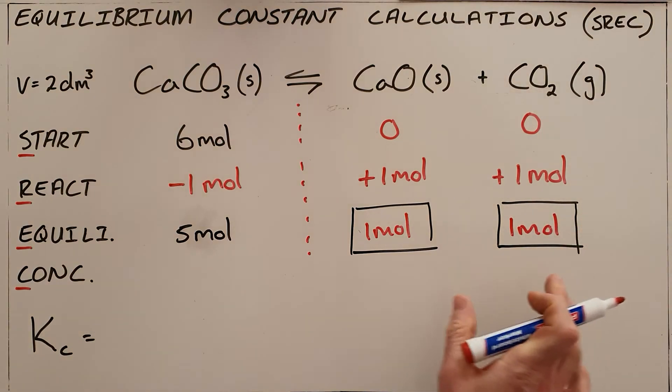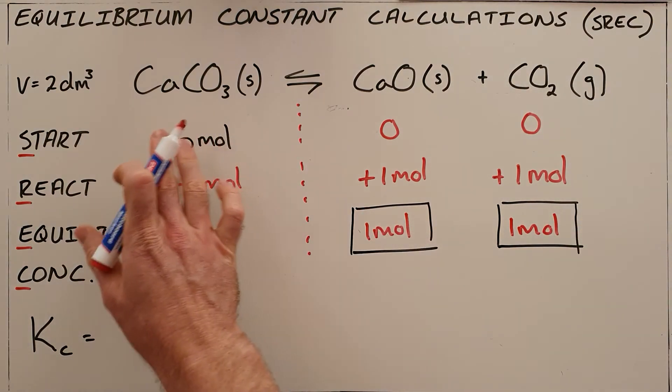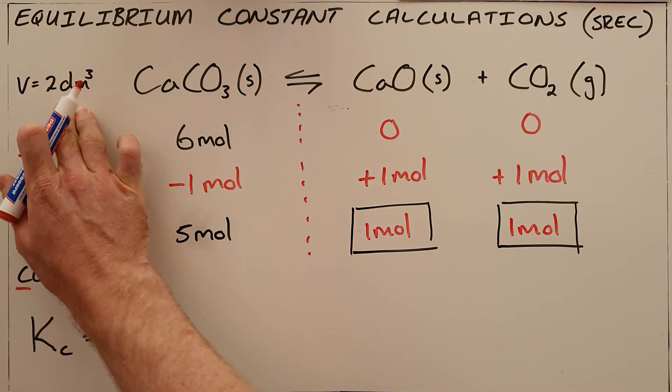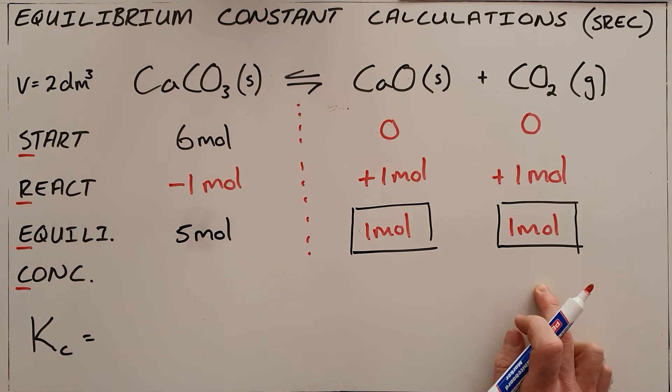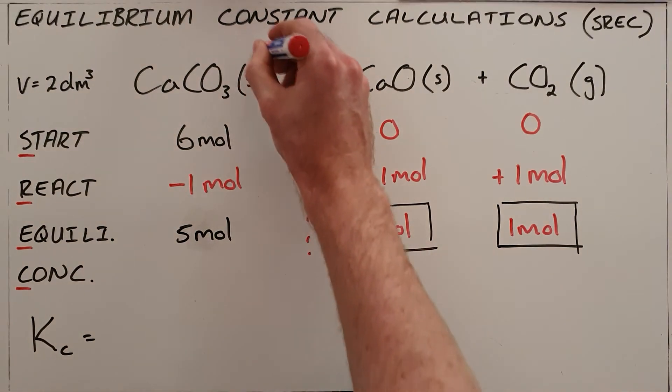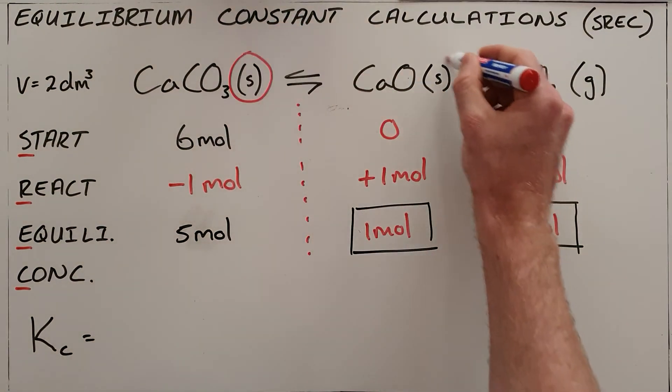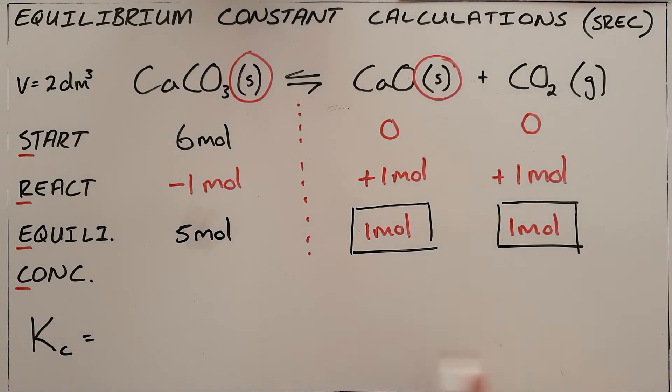And then the last point here was that the question asked if the volume of the container is 2 cubic decimeters, what is the concentration of each of these? And the first thing to notice here is that calcium carbonate and calcium oxide are solids, and therefore they do not have concentrations, and their concentrations do not change.